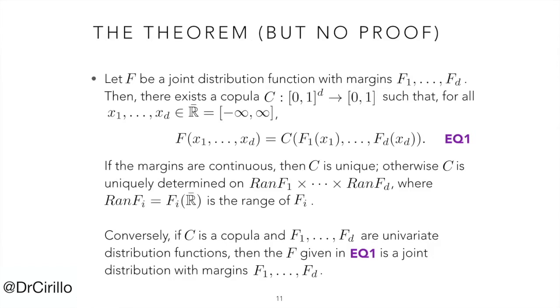On your screen you can read the text of Sklar's theorem. We do not prove it. The summary of the theorem is that every joint distribution has a copula representation. If the marginal distributions are continuous, then this representation is unique. In other words, there exists only one copula function that can represent the dependent structure.